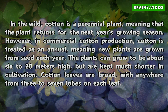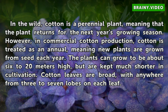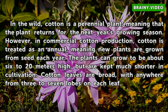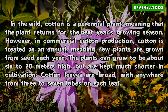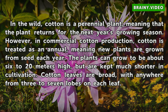In the wild, cotton is a perennial plant, meaning that the plant returns for the next year's growing season. However, in commercial cotton production, cotton is treated as an annual, meaning new plants are grown from seed each year. The plants can grow to be about 6 to 20 meters high, but are kept much shorter in cultivation. Cotton leaves are broad, with anywhere from 3 to 7 lobes on each leaf.